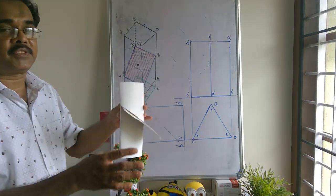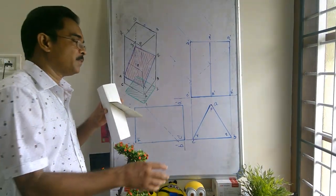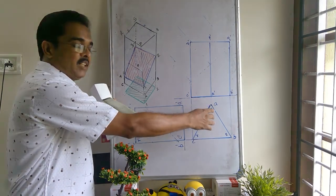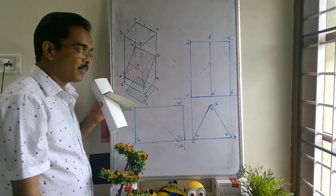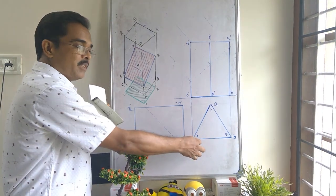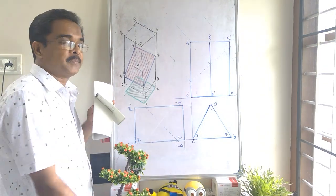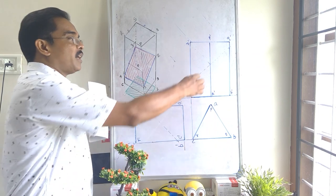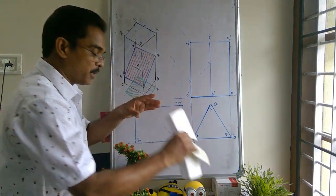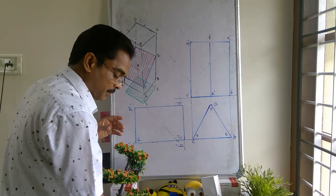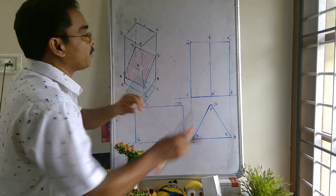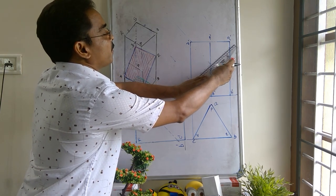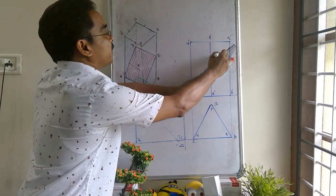So the first thing is, draw the plan and elevation as per the required condition. Here one side of the triangular prism is parallel to VP. Then the second step is, draw the cutting plane as per the required condition. So I am drawing the cutting plane, 40 degree to HP and by certain gas.